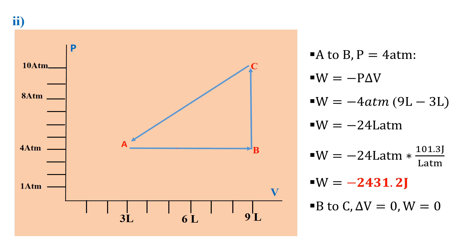For B to C, the process occurs at constant volume of 9 liters. The volume does not change, so ΔV = 0, and since W = −PΔV, replacing ΔV with zero gives work done equal to zero. So for B to C, ΔV = 0 and work done = 0.